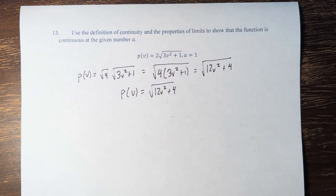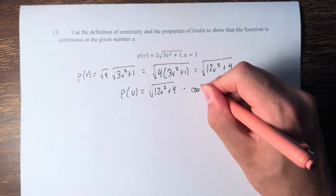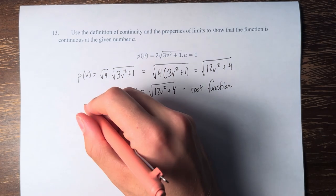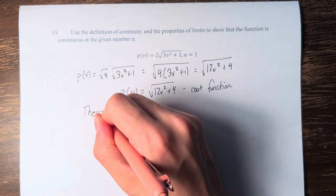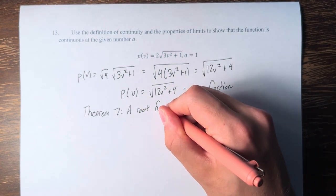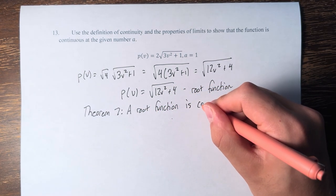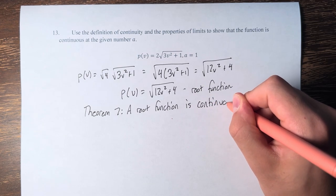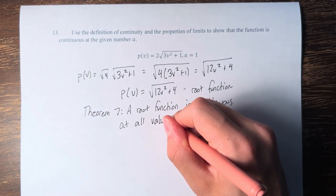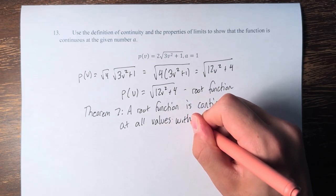Therefore, p of v is a root function. And from theorem 7, we know that a root function is continuous at all values within its domain.